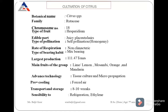The botanical classification of citrus is under citrus species. There are so many species of citrus, which we will discuss in this lecture. The family of citrus is Rutaceae. It belongs to family Rutaceae and the chromosome number is 18. The fruit type in citrus is known as Hesperidium.